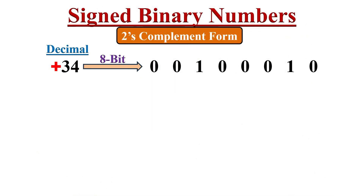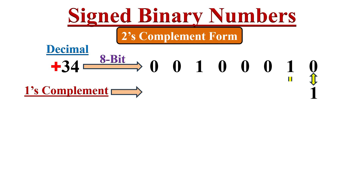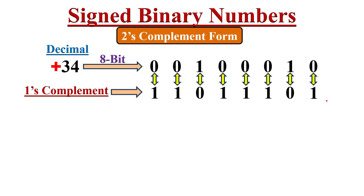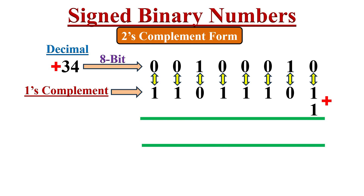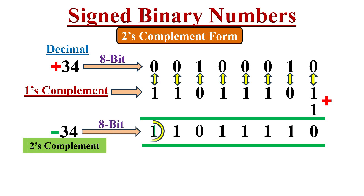The second method to find two's complement: first take the one's complement of the binary number plus 34 by inverting all bits — zeros with ones and ones with zeros. Then add 1 to this one's complement number. The resultant number is the two's complement of that particular number, giving minus 34 in two's complement form. So by taking one's complement and then adding 1, we can obtain the two's complement representation.